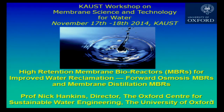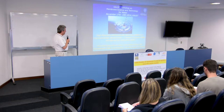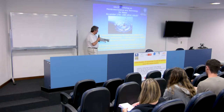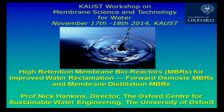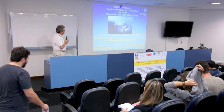I'm going to talk about high retention membrane bioreactors — meaning everything is being trapped behind the membrane — being used for improved water reclamation. I'll talk about two kinds of MBR: the forward osmosis MBR and the membrane distillation MBR. Both of them can be operated using either renewable energy or waste heat, such as waste heat from the condenser of a normal power station. So it's cheap energy.